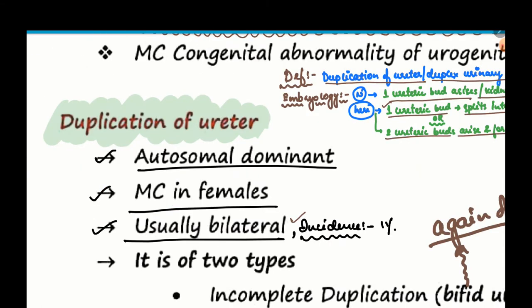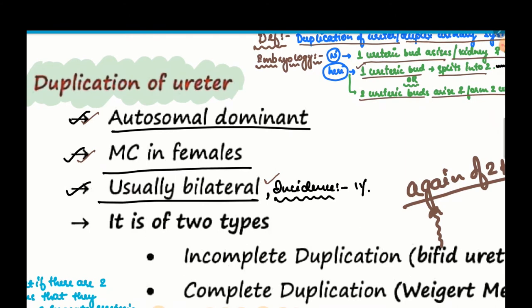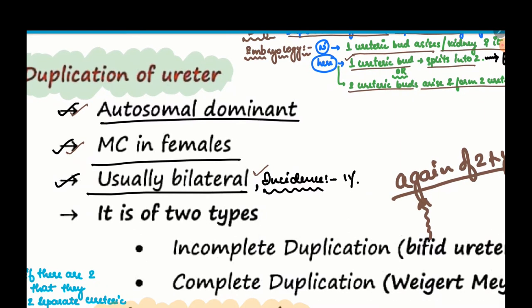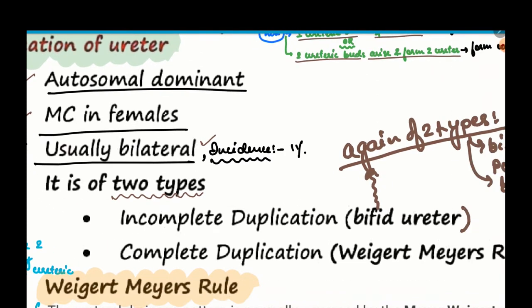The incidence is 1%. It is an autosomal dominant condition, more commonly found in females. It is of 2 types: incomplete duplication and complete duplication.